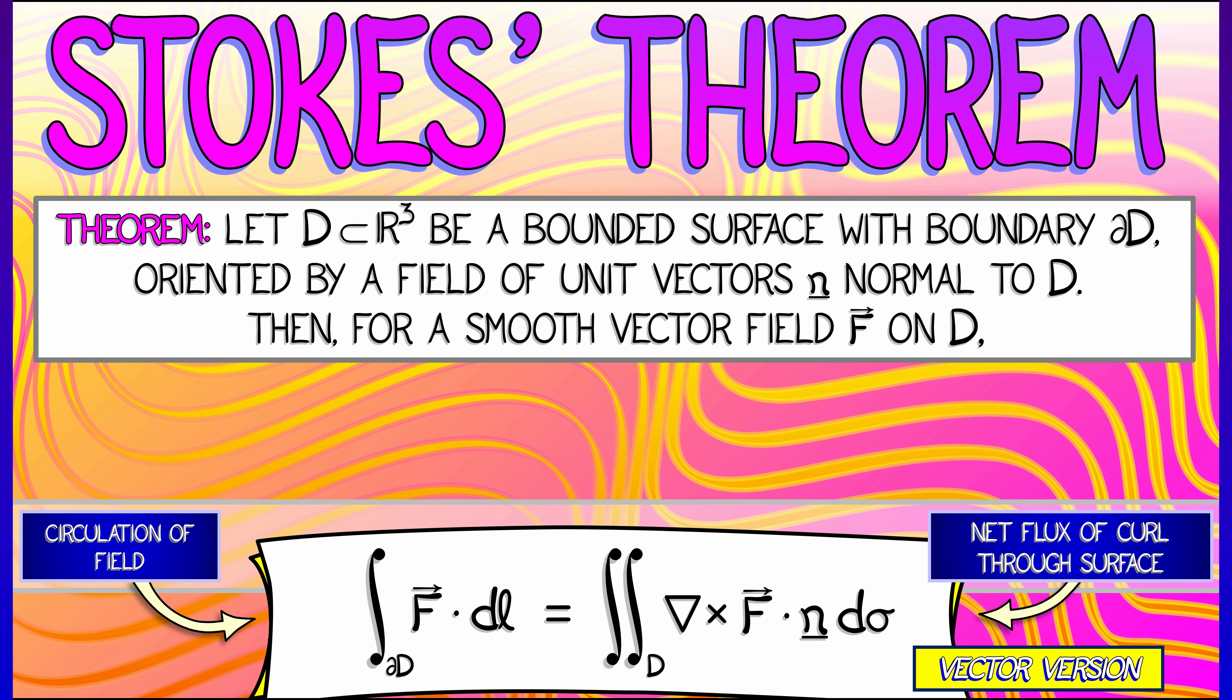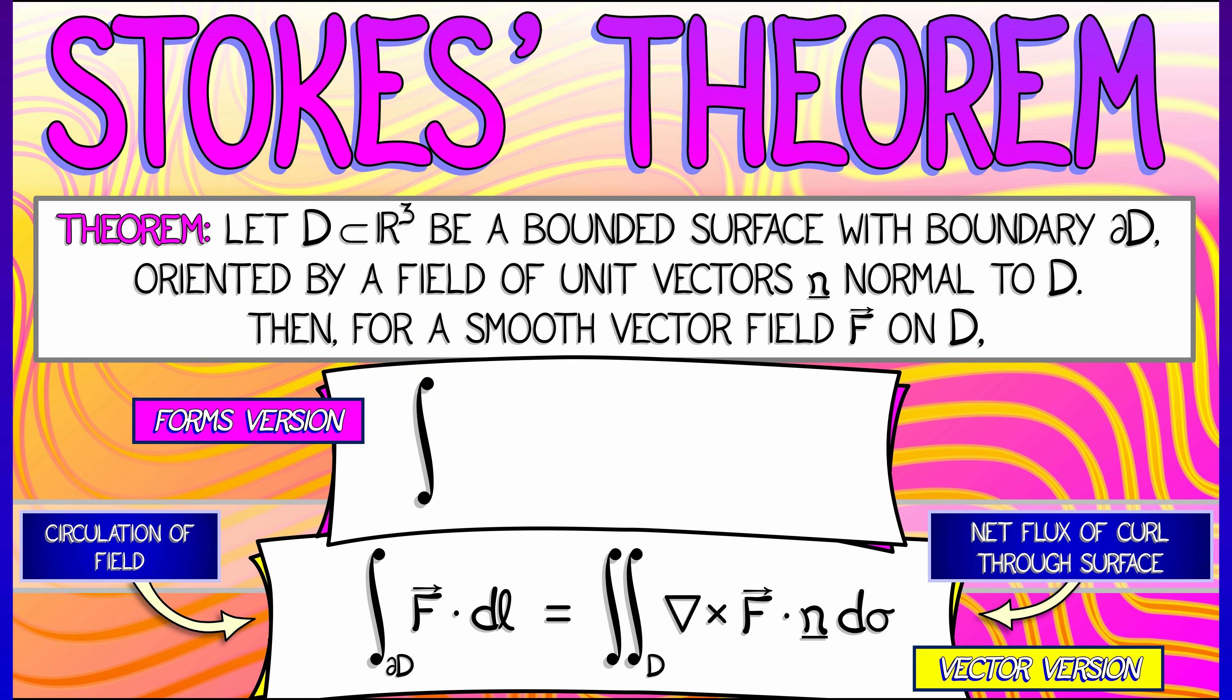Now, that version of Stokes theorem looks a little complicated, a lot of symbols there. Students tend to get a little frustrated with how that looks and trying to remember it. I recommend thinking in terms of differential forms, where it's the same formula. We integrate the work one form, alpha F, along the boundary. That's the same thing as the integral of its derivative, D alpha, along the interior of D. That two form gives us the flux of the curl of F through that surface.